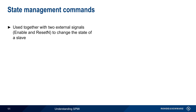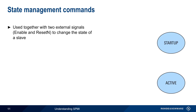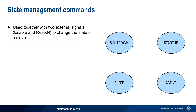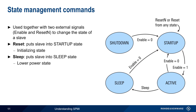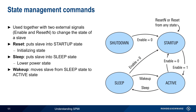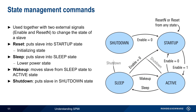State management commands are used together with two external signals to move an SPMI slave between one of four states: startup, active, sleep, and shutdown. The reset command, or the external enable and reset-end signals, can be used to move the slave from any state into the startup state, which is the state used for device initialization. The external enable signal is used to transition to the active or power-on state, which also allows read-write access to the slave registers. The sleep command moves the slave into the lower power sleep state, and wake-up moves the slave back into the active state. Finally, the shutdown command moves the slave to the shutdown state, in which all power is off.